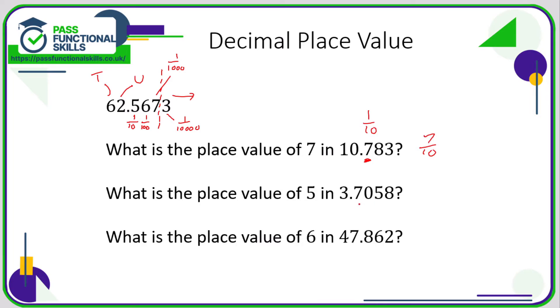The value of five in 3.7058 — the tenths column, the hundredths column, so the five is in the thousandths column, giving it a value of five thousandths.